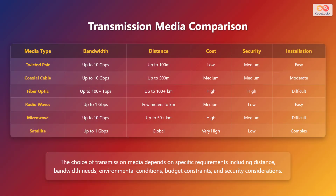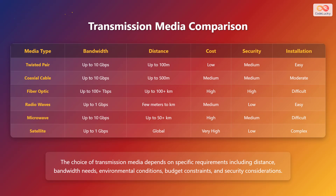Let's compare the various transmission media based on different factors. Twisted pair cable offers bandwidth up to 10 gigabits per second and a distance of up to 100 meters at a low cost. Coaxial cable also offers bandwidth up to 10 gigabits per second but extends the distance to up to 500 meters at a medium cost. Fiber optic provides the highest bandwidth, reaching up to 100-plus terabits per second and distances up to 100-plus kilometers. Radio waves offer bandwidth up to 1 gigabit per second and cover distances from a few meters to kilometers at a medium cost. Microwave communication provides bandwidth up to 10 gigabits per second and distances up to 50-plus kilometers. Satellite communication offers bandwidth up to 1 gigabit per second. The choice of transmission media depends on specific requirements, including distance, bandwidth needs, environmental conditions, budget constraints, and security considerations.